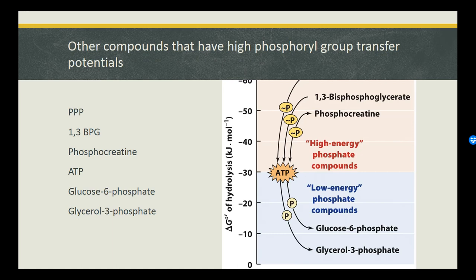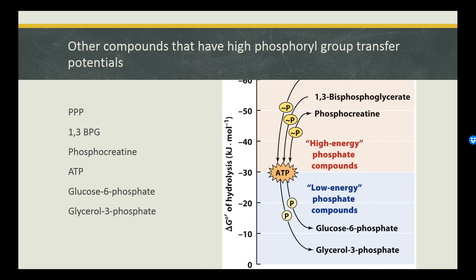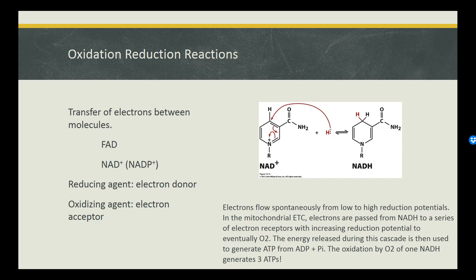While ATP is the most common high energy molecule discussed in undergraduate courses, there are a number of molecules the cell can use to temporarily store and transfer energy. Often in catabolism we start with lower energy molecules such as G3P and G6P and work our way up to 1,3-BPG and PPP to generate metabolic flux, while in anabolic pathways we start with higher energy compounds and work our way down. While NADH and FADH2 are not themselves energy storage molecules, they are equally important in anabolic and catabolic pathways, used in electron transfer reactions known as oxidation-reduction.